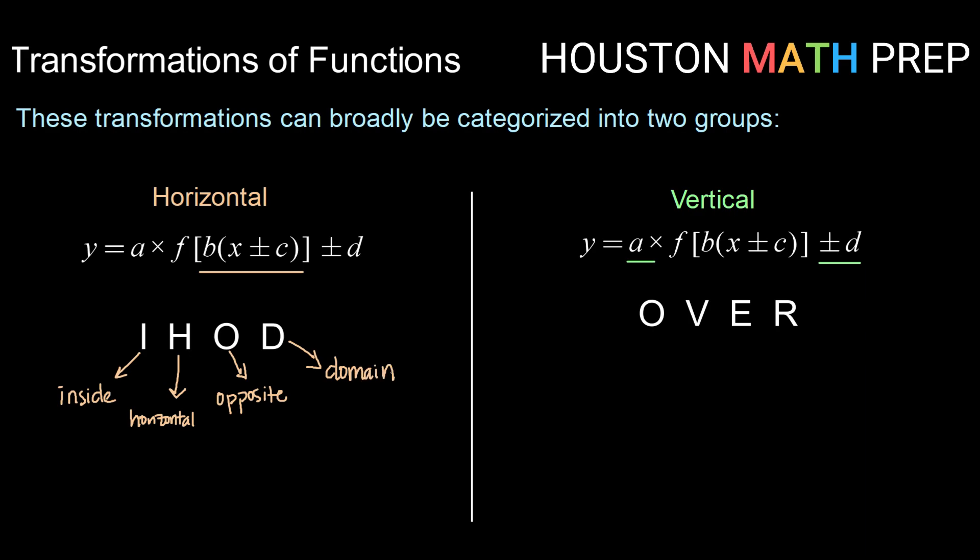So anything that's on the inside changes our graph horizontally. It does the opposite of what it might appear, and it affects the domain.